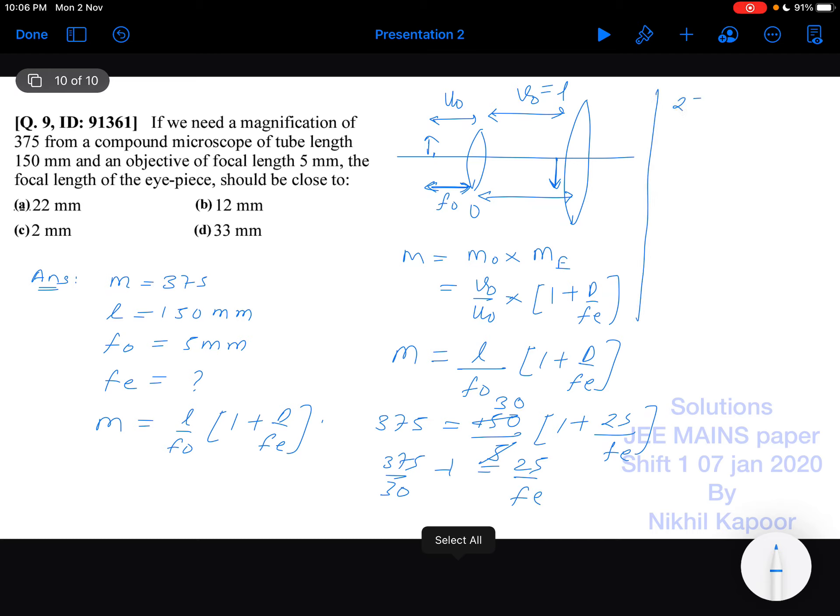Now 25 upon fe equal to 345 upon 30. So 25 upon fe would be equal to 34.5 upon 3, which equals 11.5. So fe would be 25 upon 11.5.